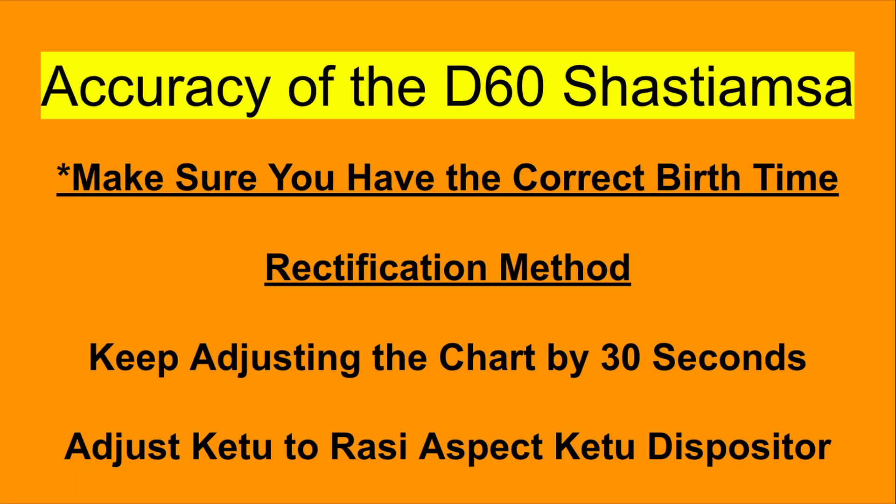Accuracy is extremely important in the D60 chart because it changes every two minutes, which means you could have a birth time that is slightly off from the true time of birth. This becomes extremely important in terms of rectifying the chart. There are two methods typically used. One is to keep adjusting the time of birth by 30 seconds to see how this changes the positions in the D60 chart. The method I have found that works best is to change it according to K2's position in the chart — something that comes from Jaimini Astrology and is recommended by Sanjay Rath.